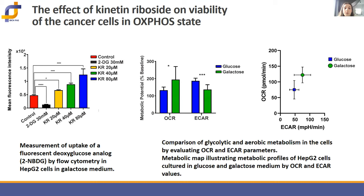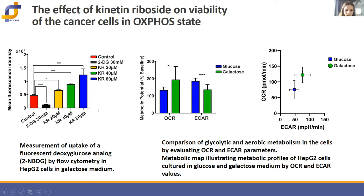We characterized the metabolic phenotype of HepG2 cells using the Seahorse Extracellular Flux Analyzer. In this system, oxygen consumption rate (OCR) evaluates oxidative phosphorylation, and extracellular acidification rate (ECAR) serves as a glycolysis indicator. Comparing OCR and ECAR in both glucose and galactose conditions indicated higher ECAR potential in glucose medium and higher oxygen utilization in galactose medium, providing evidence that HepG2 cells in galactose enhance their oxygen consumption capacity through increased oxidative phosphorylation.